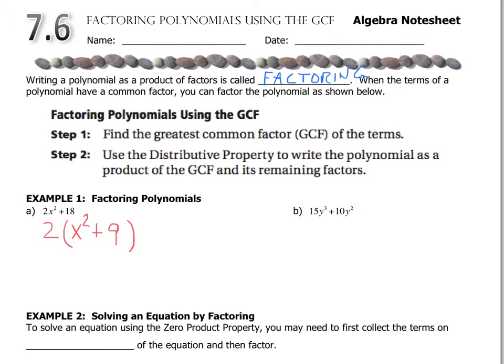It becomes 2 times the product, 2 times the grouping x² + 9. I can check my work by using the distributive property.